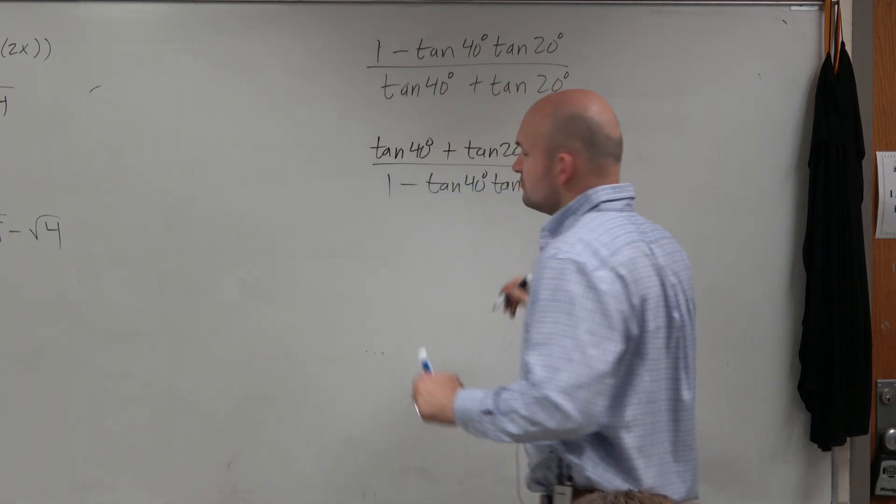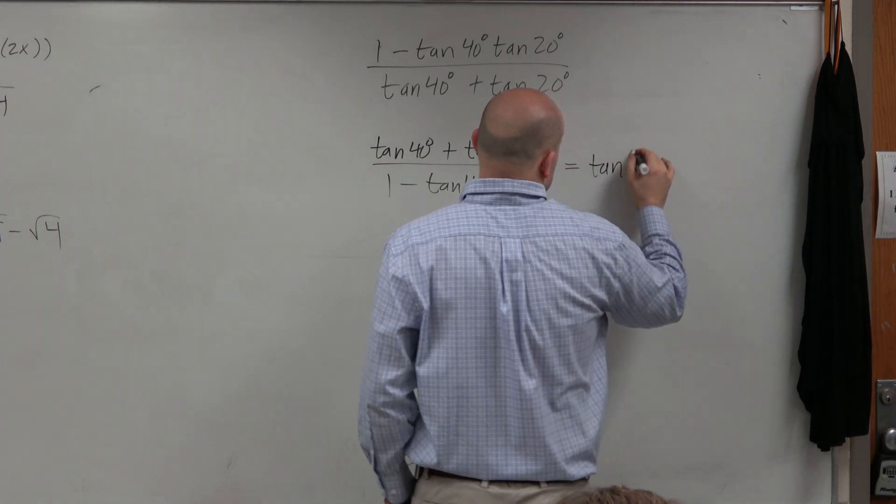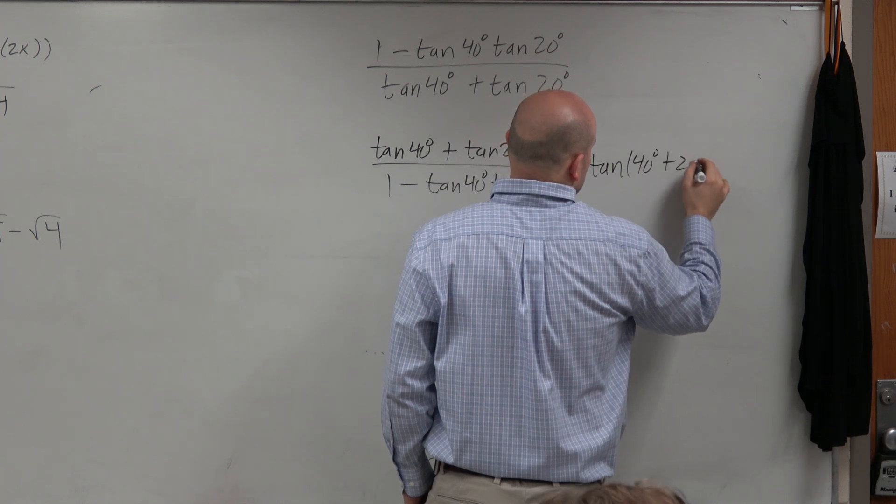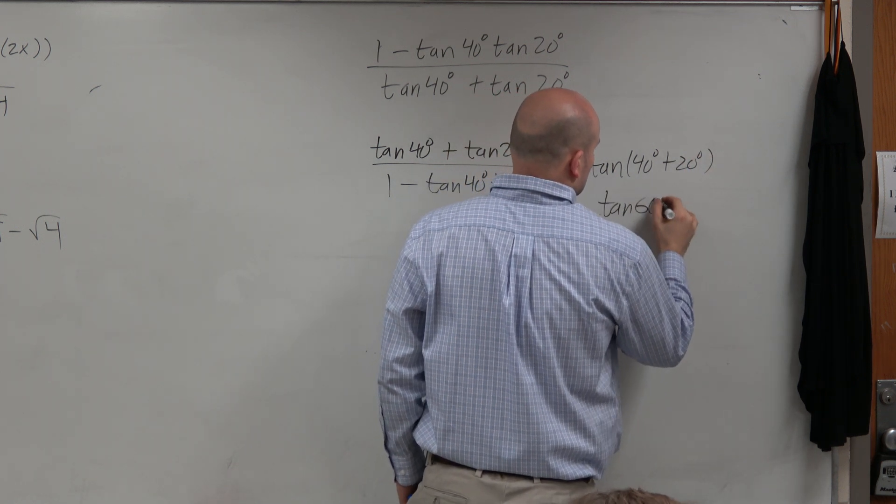So that represents what for tangent? The sum of two angles, 40 degrees plus 20 degrees, which is the tangent of 60 degrees.